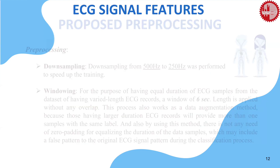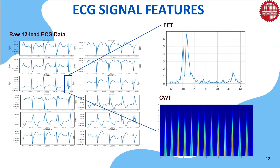Now we can see the ECG signals. Normally, a cardiologist looks for the duration and amplitude of the QRS complex, the RR interval, the PR interval, the QT interval, ST elevation and depression, and the presence or inversion of P or T waves to diagnose different classes of arrhythmia. Our model also needs to obtain inherent ECG patterns to classify the classes from many features. So we tried to implement the Fast Fourier Transform (FFT) in the frequency domain and the Continuous Wavelet Transform (CWT) pattern of the ECG signal to classify arrhythmia.